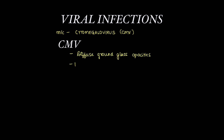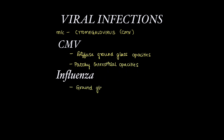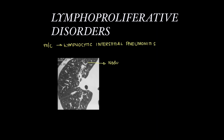Viral infections show very non-specific features. Cytomegalovirus most commonly shows diffuse ground glass opacities and patchy interstitial opacities. Influenza can also occur, showing ground glass opacities or patchy areas of consolidation. For lymphoproliferative disorders in HIV, the most common presentation is lymphocytic interstitial pneumonitis, showing nodular interstitial thickening with or without ground glass opacities.